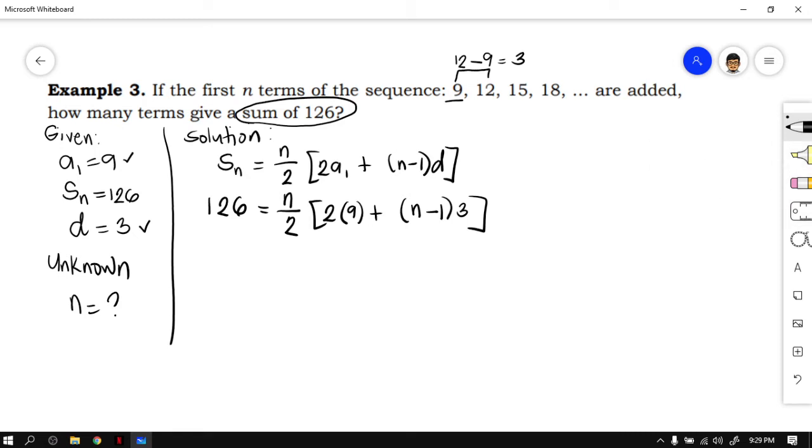Next from here, you have to cross-multiply, in which you have to multiply 126 and 2. So you have 126 times 2 is equal to n, quantity 2 times 9, that is 18, plus distribute 3. 3 times n is 3n, 3 times negative 1, that is negative 3.